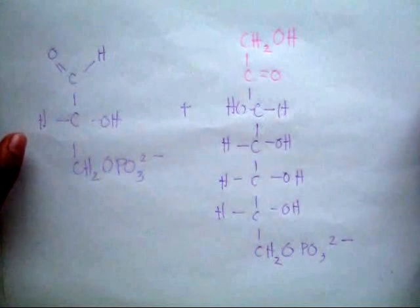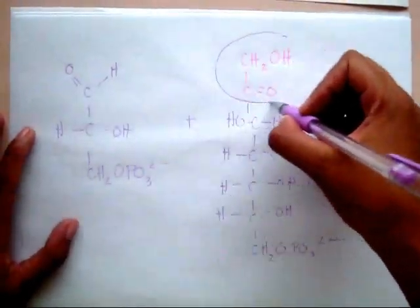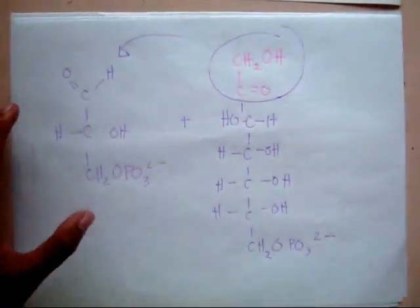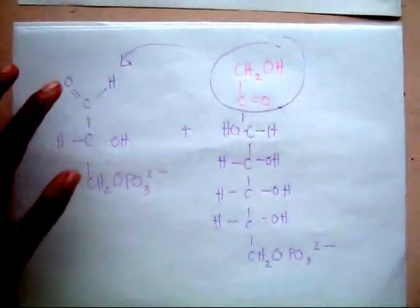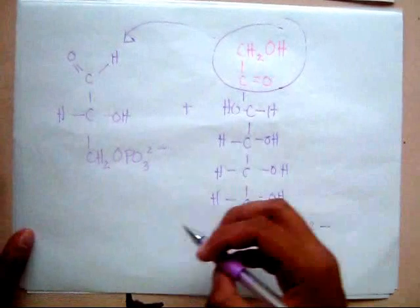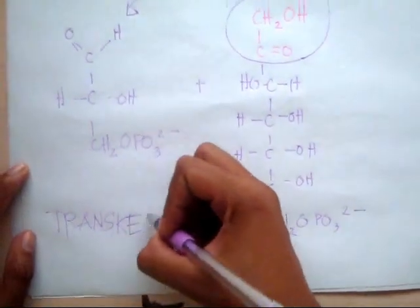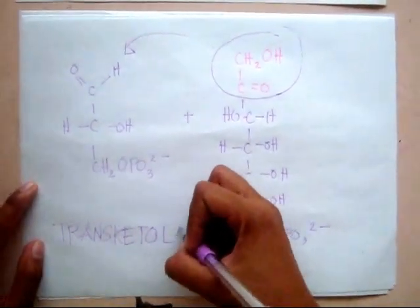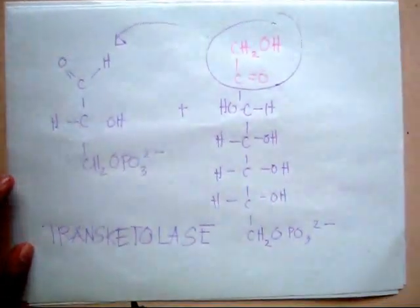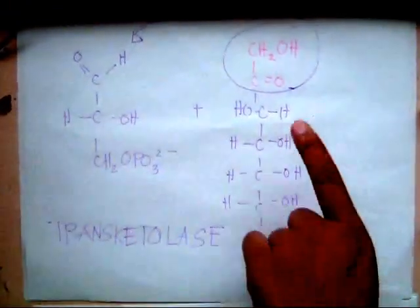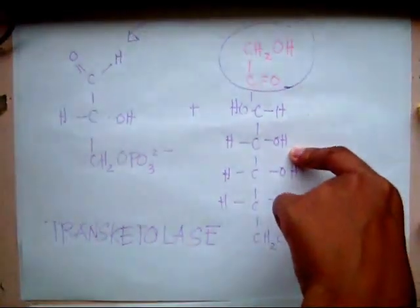As you can see, a two-carbon fragment is transferred from the ketose to the aldose. This is the transferred two-carbon fragment from xylulose-5-phosphate, and it became glyceraldehyde-3-phosphate. This reaction is catalyzed by the transketolase. The products of reaction one, glyceraldehyde-3-phosphate and sedoheptulose-7-phosphate, are the substrates for reaction two.